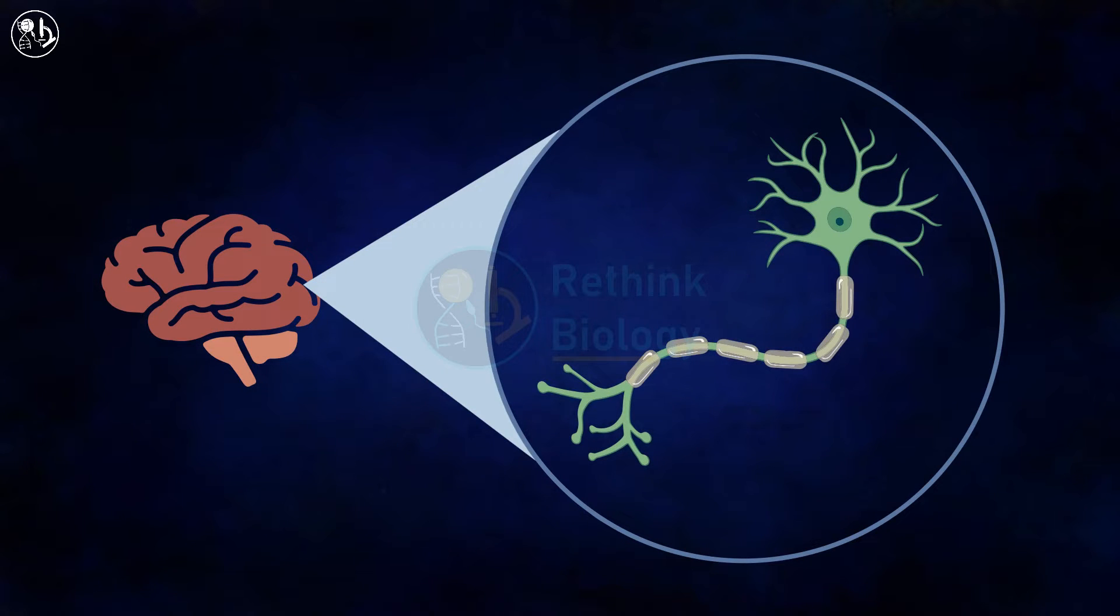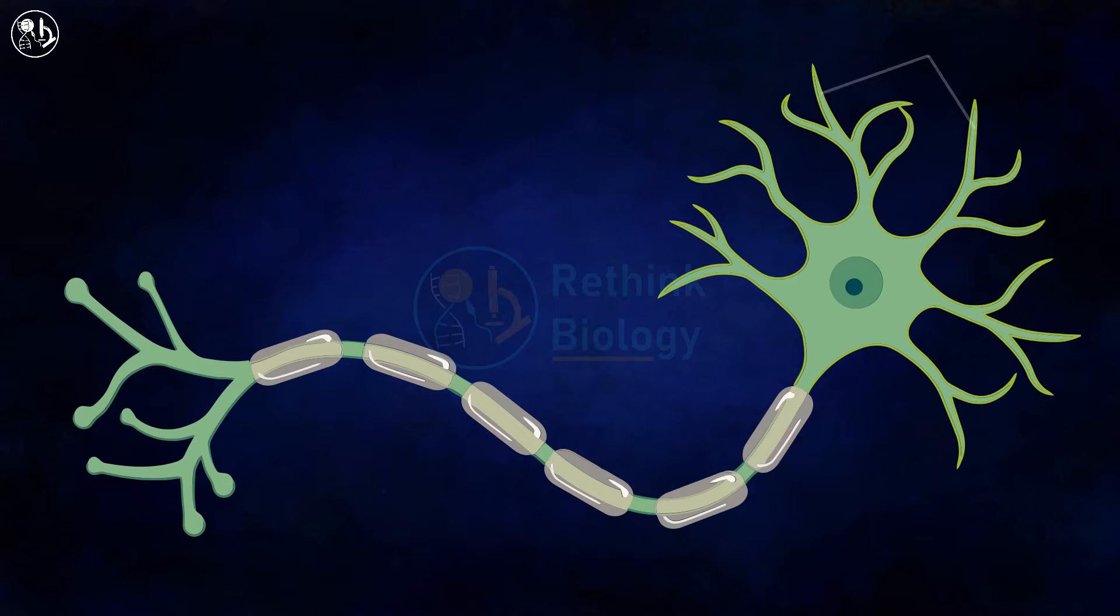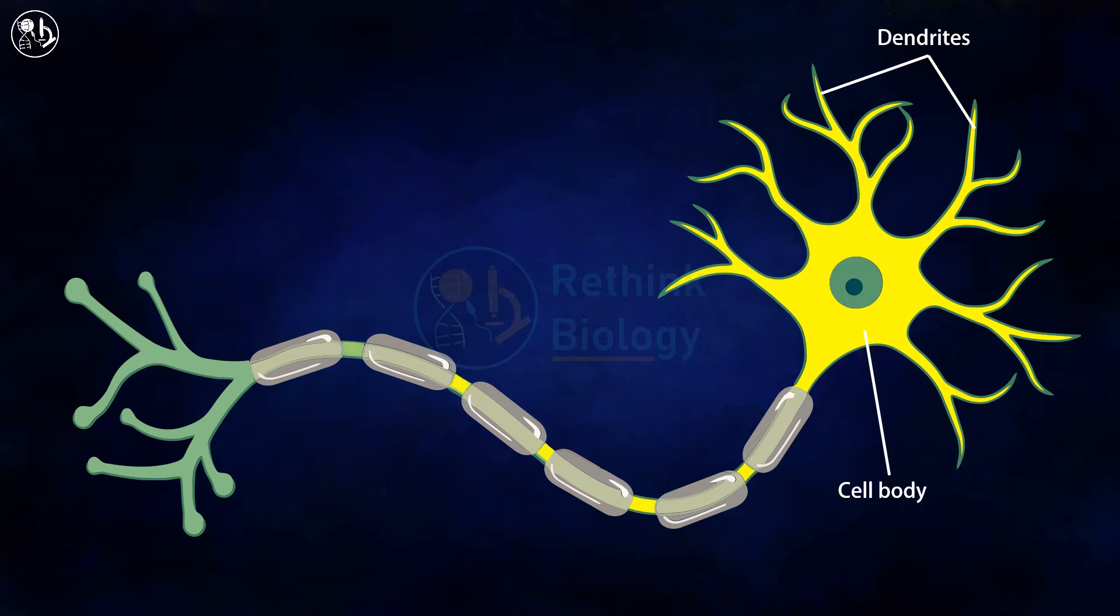Neurons are the building blocks of the nervous system. Neurons have three distinct parts including dendrites, cell body, and axon, which helps in transmission of information in the form of electrical and chemical signals.